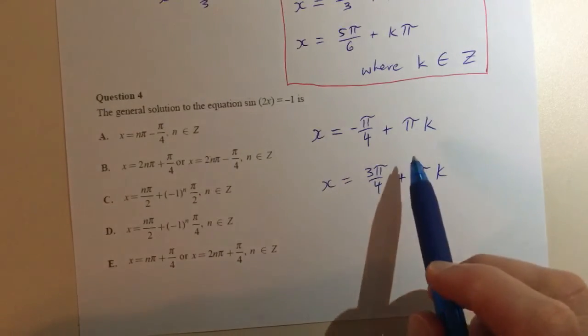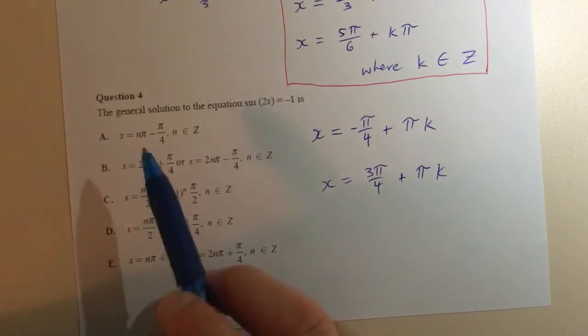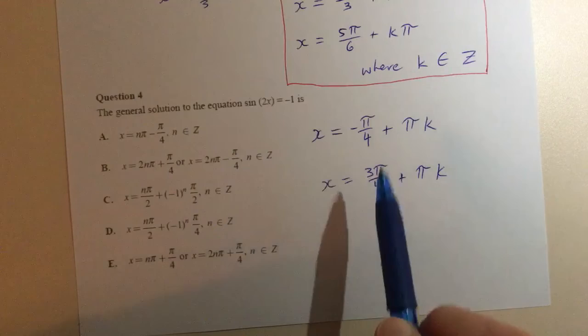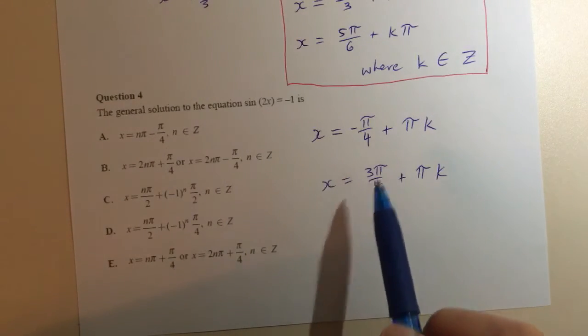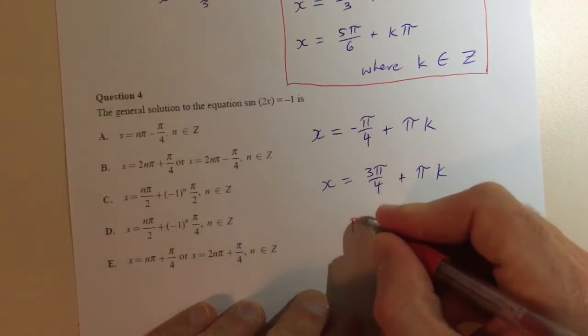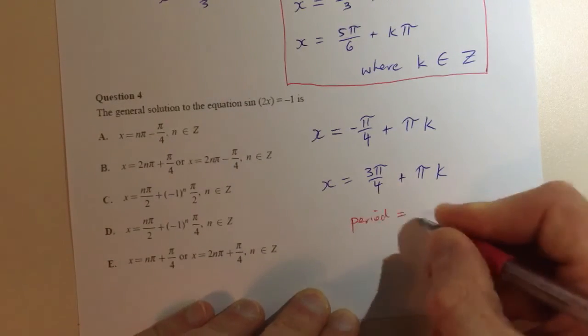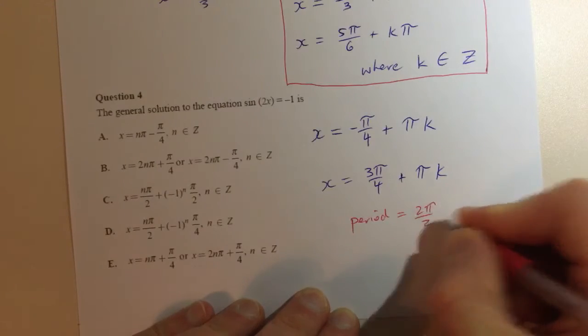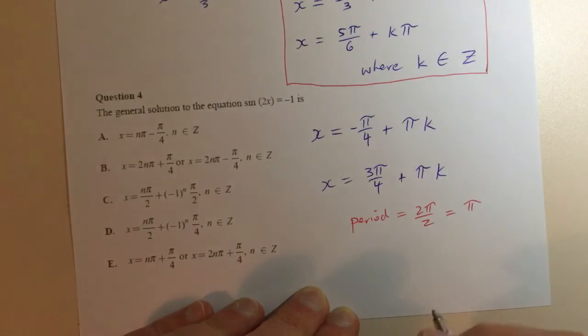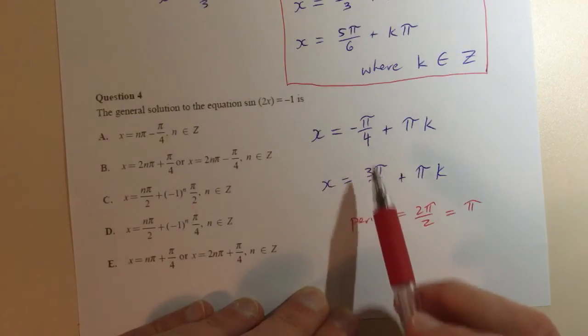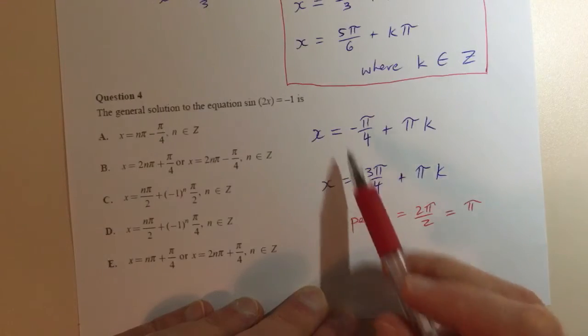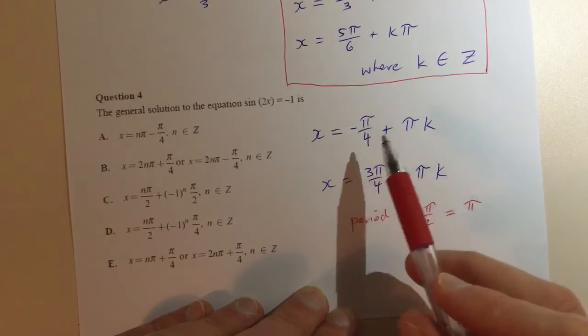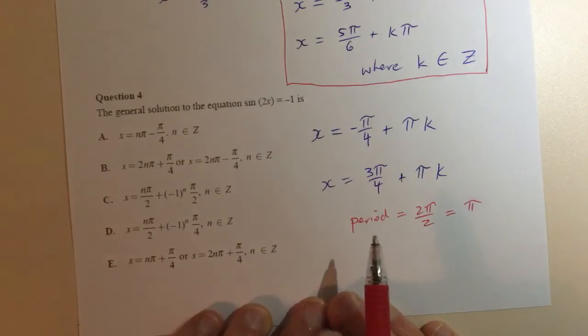Well if those are my general solutions I've now just got to see what this matches up to. Now a little bit of an unusual thing the calculator has done here is it's actually given us really the same solution twice, which is a bit unusual, it must just be the way that it's built in to solve these things. Because the period of this equation is 2π on 2 which is equal to π, so you can actually see that these two things are one period apart. So we really only need one of these two answers. Both of these answers are correct, they both represent the same thing, so really we only need one of these answers.